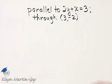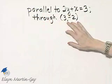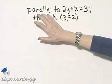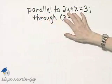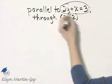Let's write an equation of the line that's parallel to this line through this point. Since we want a line parallel to this line, we need to find the slope of this line. How do we find the slope of this line?